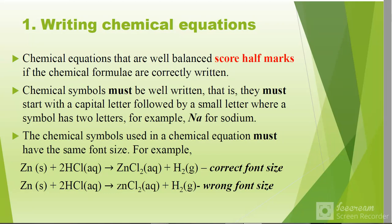Number one, writing chemical equations. A chemical equation that is well-balanced scores half a mark. When you balance a chemical equation, you get half a mark. When you write the chemical formulas correctly, you get another half a mark. Chemical symbols must be well-written. They must start with a capital letter followed by a small letter where a symbol has two letters. For example, sodium: N should be capital, A should be small. Magnesium: capital M and small g. That M should not touch the other letter. No letter should touch the other.